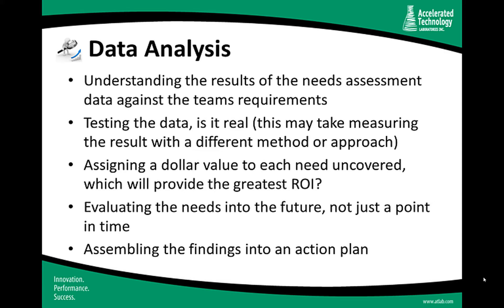The next part — in some cases easy, in others a little tricky — is assigning a dollar value to each requirement. Some are easy: if an analyst spends two hours a day doing data review by hand, checking results on reports versus doing it on screen in the LIMS which may take 10 minutes, you can calculate the analyst's hourly pay and the time spent to come up with a cost for doing the work manually versus automated. Once those types of numbers are generated, it's easy to say yes or no in terms of implementing a piece of automation.